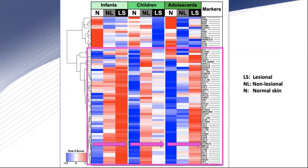These genes include markers of general inflammation and innate immunity such as MMP12, IL-8, and IL-6, T-cell activation markers such as ICOS, and TH2-related markers including key AD-related markers such as CCL17 (TARC) and IL-13, across all AD age groups.